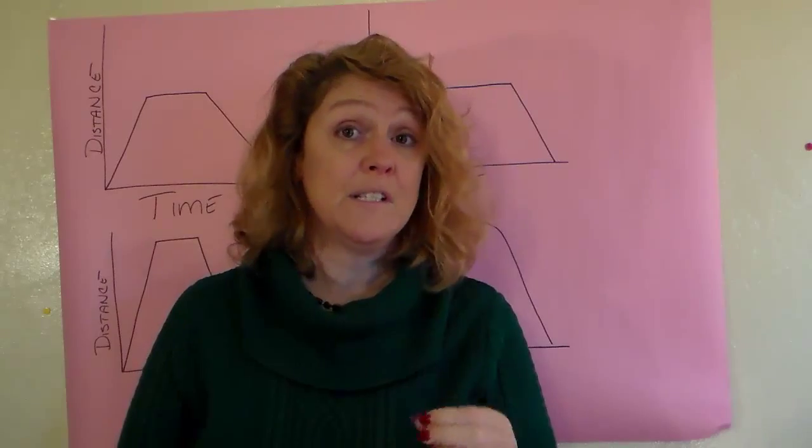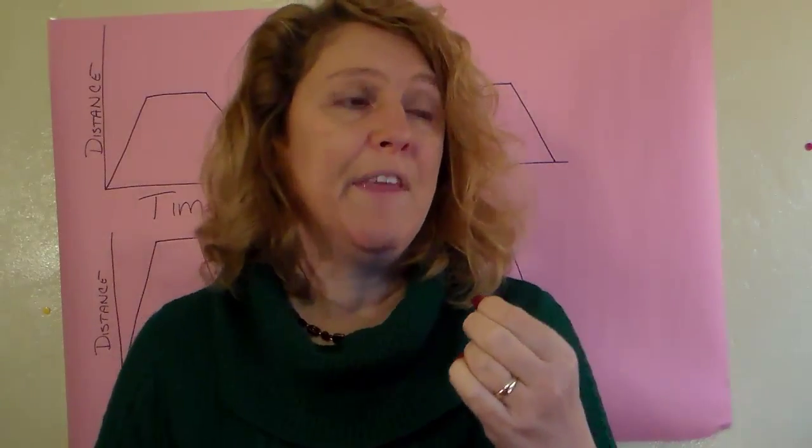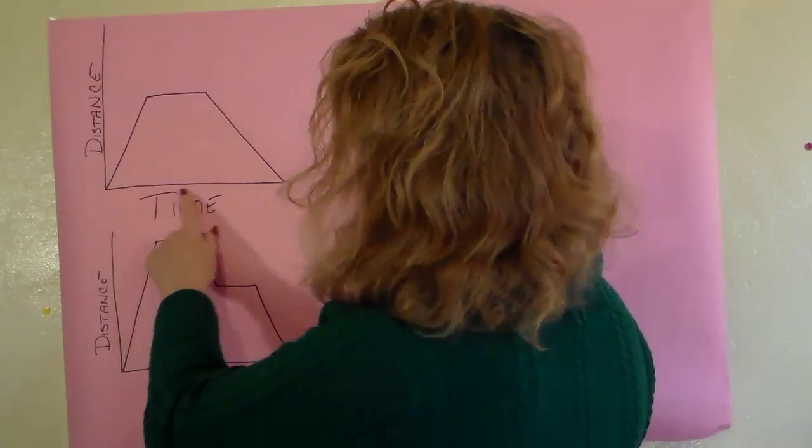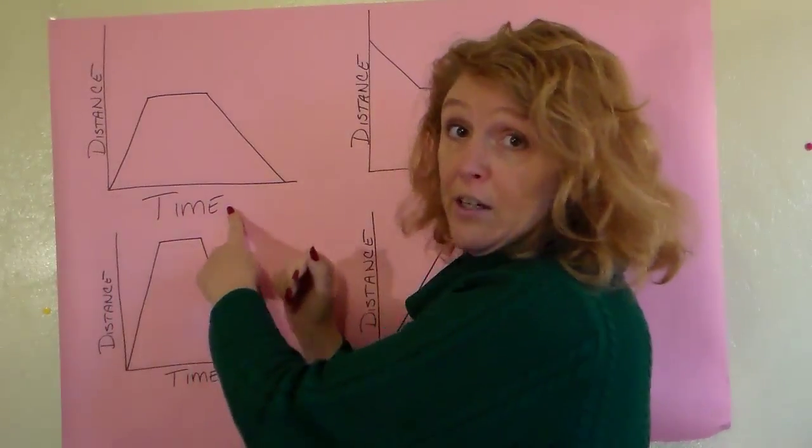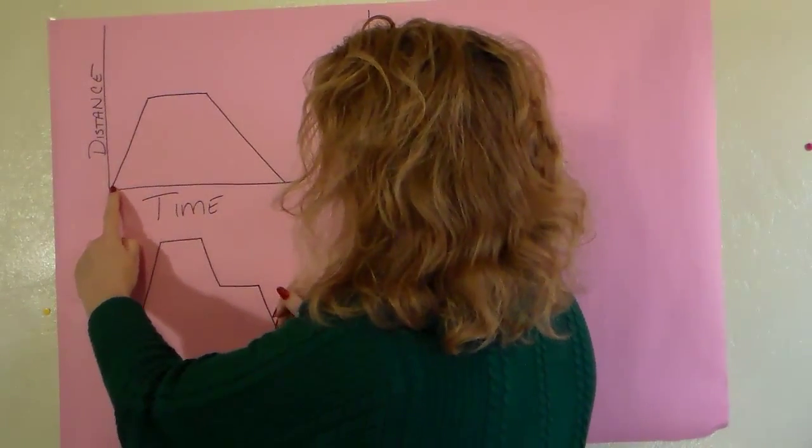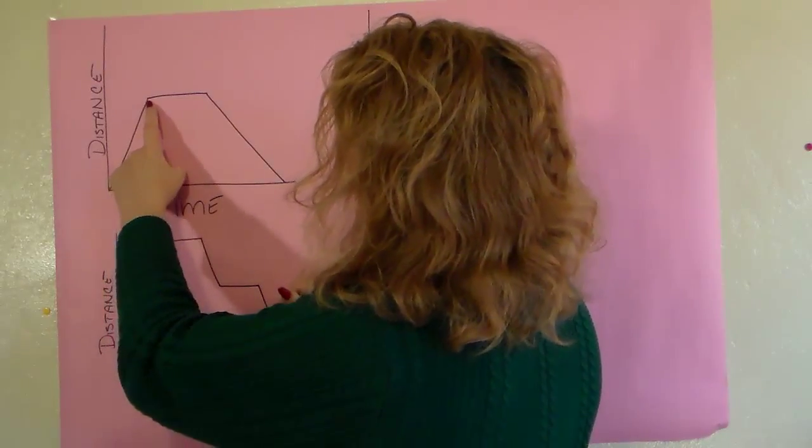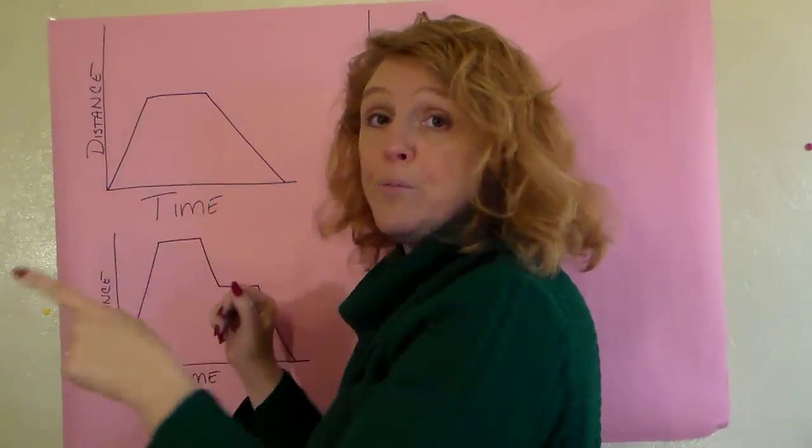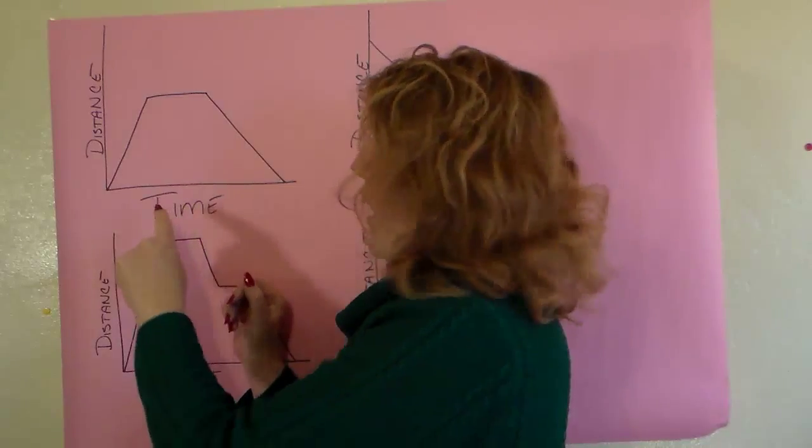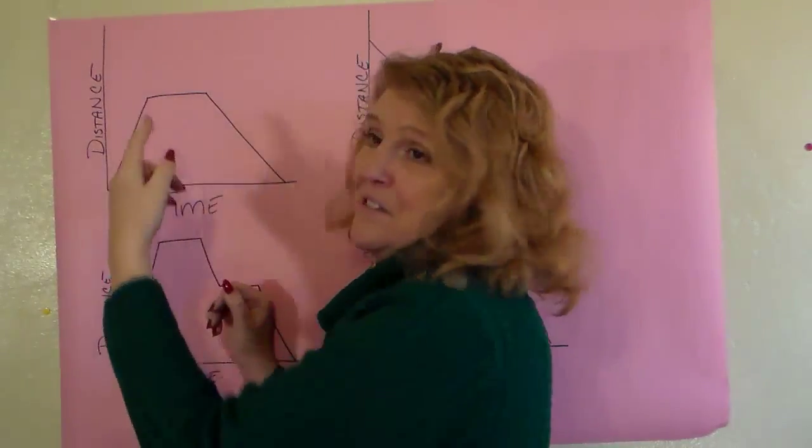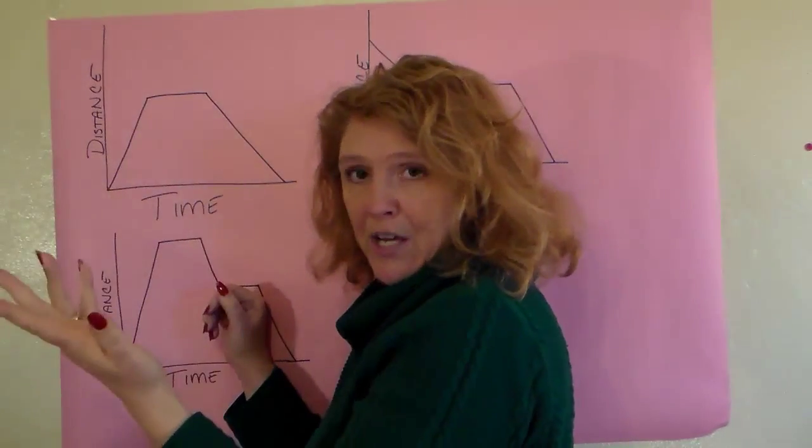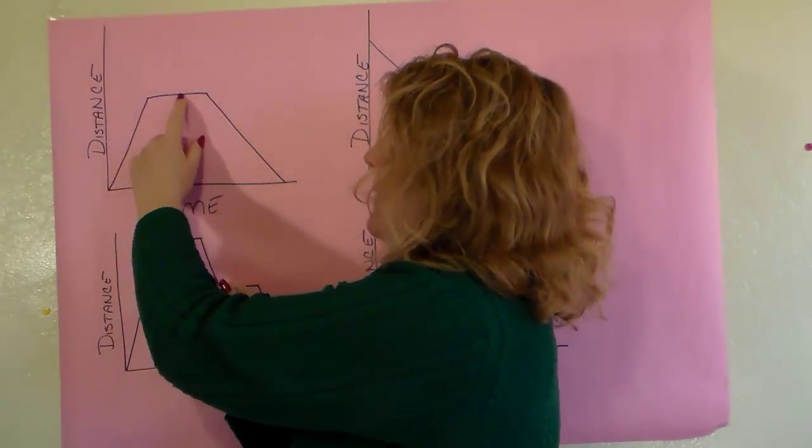There are other distance time graphs that also show you some additional information. For example, in this graph here, somebody walked for a little while and then they stopped walking. And they stayed there for a while. They sat on a bench. They stood chit chatting with somebody. They went to the store and did their shopping.